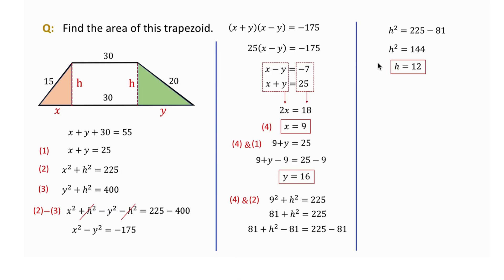Now we have the values of x, y, and h to compute the trapezoid area. The area of the left triangle S1, which is base times height divided by 2, is 54. The area of the right triangle S2 is 96.